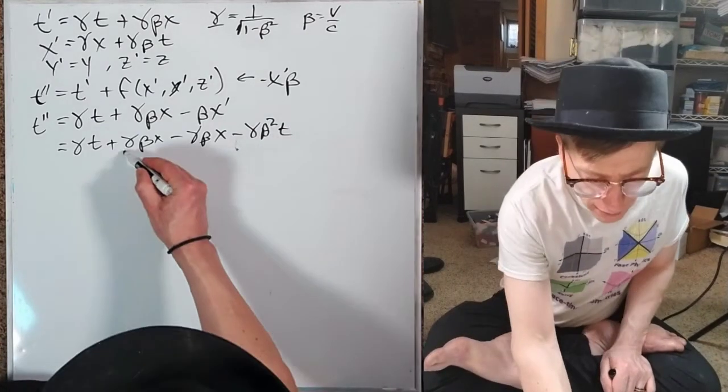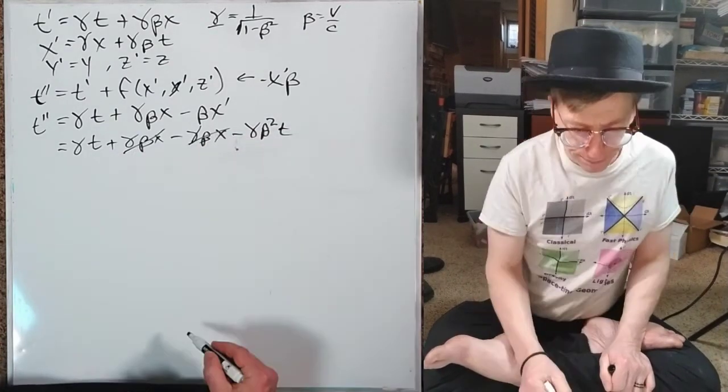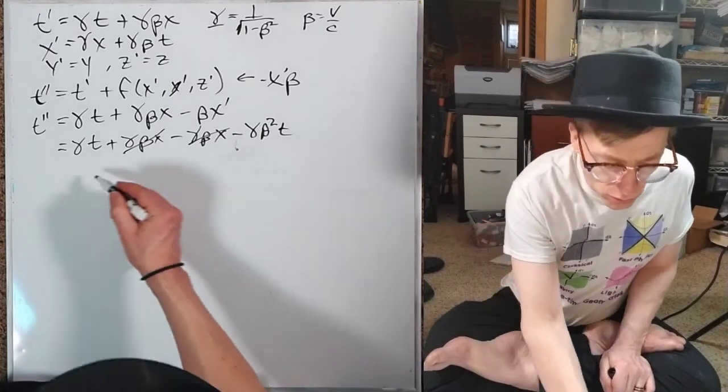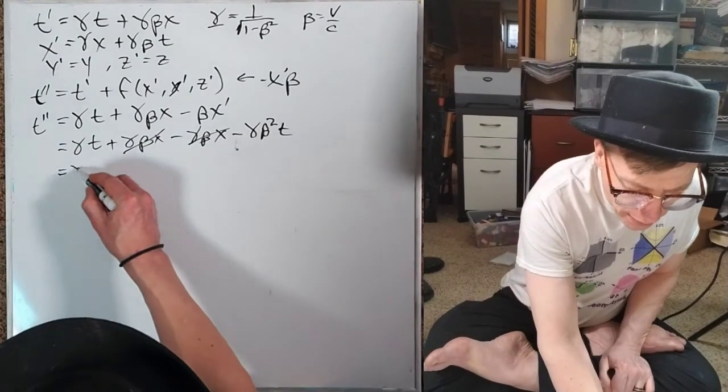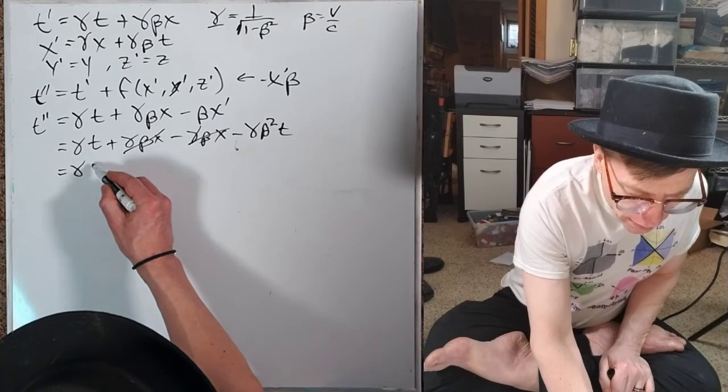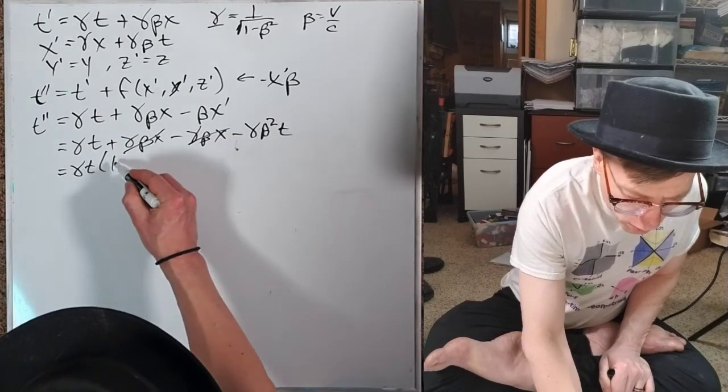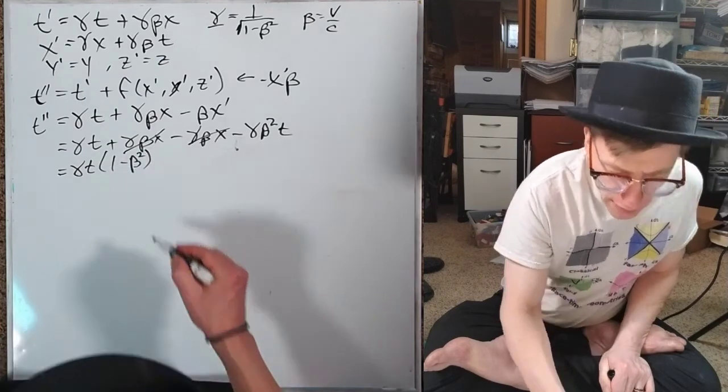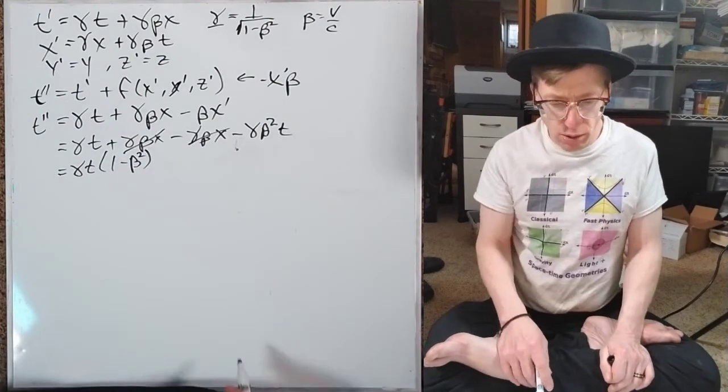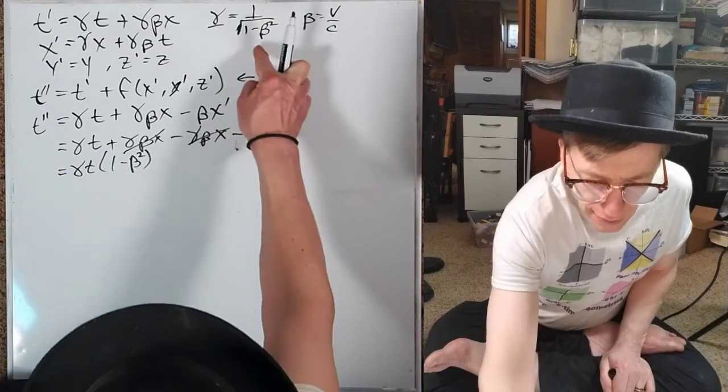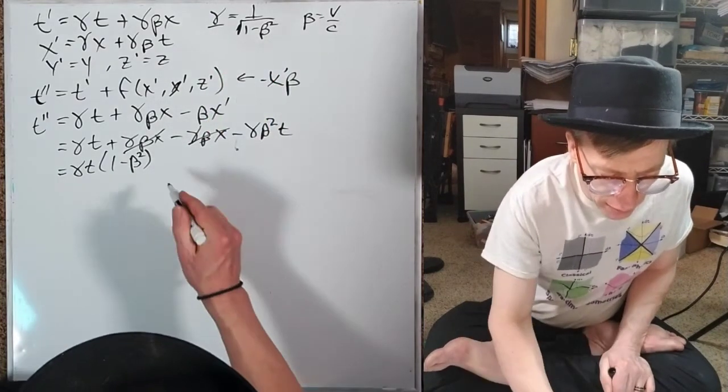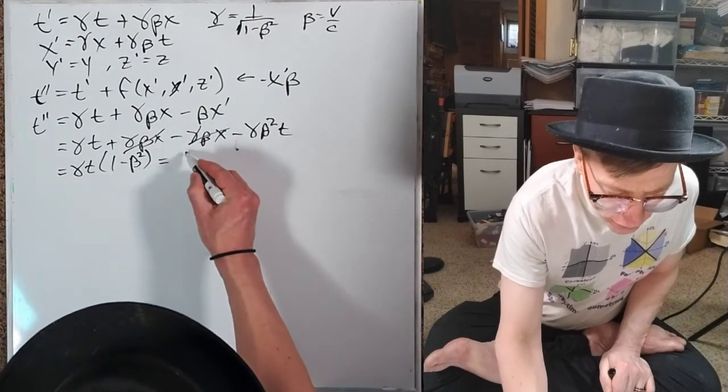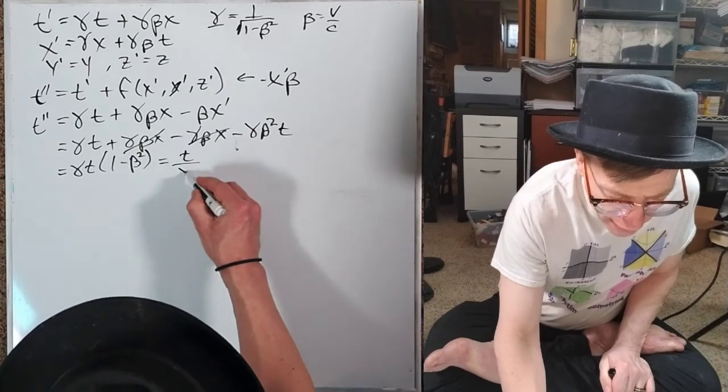I'm going to go, hey, I wanted something simpler. And so this equals then γt(1 - β²). And we go, oh, hold it. That's like a gamma squared in there.